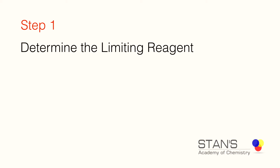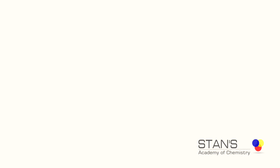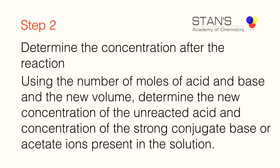The first step is to determine the limiting reagent, because the quantities of acid and base do not appear to be equal. We will determine the number of moles of acid and base using the equation n = c × v. In step two, we will determine the concentration of the species after the reaction has taken place by using the new total volume to calculate new concentrations.